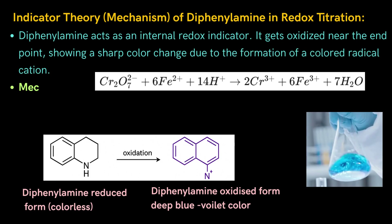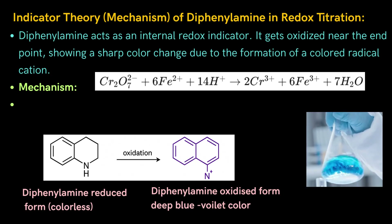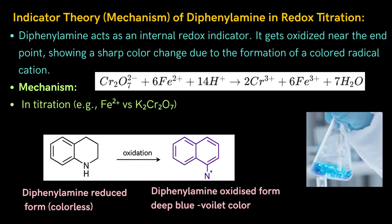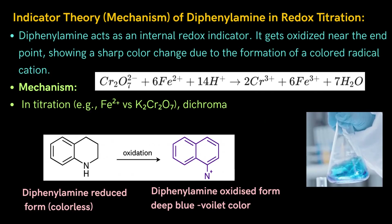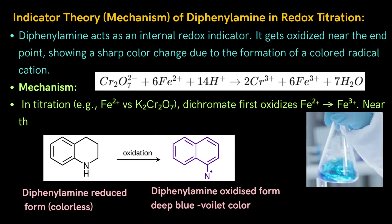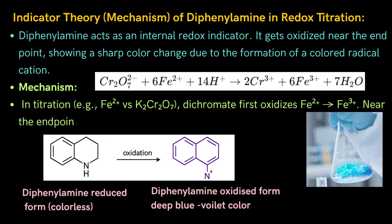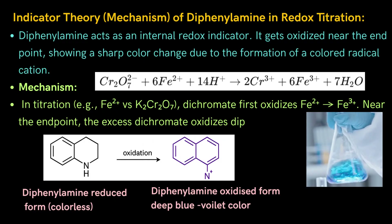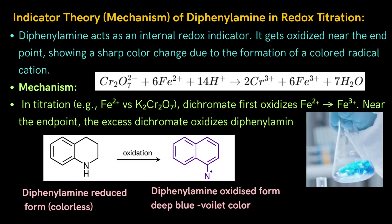The mechanism in titration of Fe²⁺ ion versus K2Cr2O7: dichromate first oxidizes Fe²⁺ ion to Fe³⁺ ion. Near the endpoint, the excess dichromate oxidizes diphenylamine and the color of the diphenylamine indicator changes from colorless to blue.